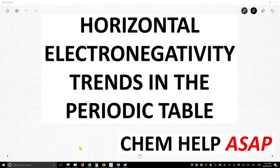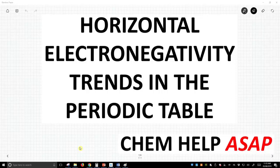Hello from Chem Help ASAP. We need to discuss how we see periodic table trends, especially how electronegativity tends to increase as we go from left to right across the periodic table.